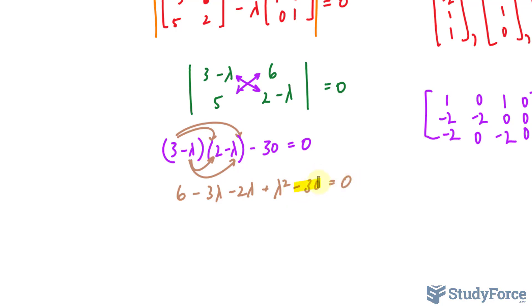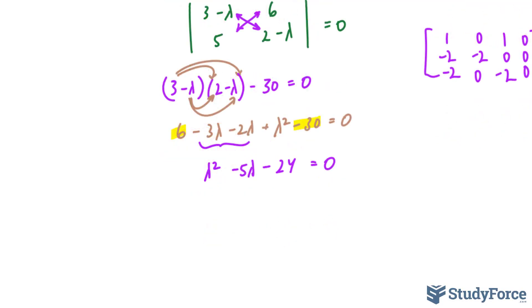Notice that we can combine negative 30 and 6 to give us negative 24. And we can also combine these two terms to give us negative 5 lambda. So we have negative 5 lambda as the middle term minus 24 and lambda squared is equal to 0. Can you think of two numbers that multiply to negative 24 and add to negative 5? I can think of negative 8 and positive 3. So I can factor this and I can now solve for lambda. This gives me two solutions, positive 8 and negative 3.